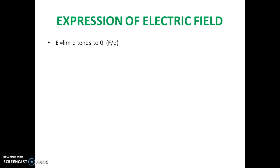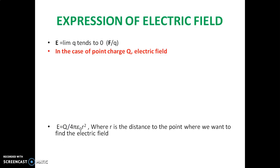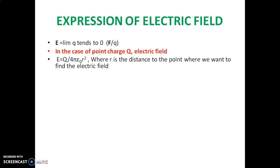We write limit Q tends to 0 of F by Q to represent the force experienced on a unit charge. Here E and F are written in bold letters to show they are vectors. In the case of a point charge Q, the electric field is equal to Q by 4πε₀R², derived from Coulomb's law where F equals capital Q times small Q divided by 4πε₀R², and E equals F by small Q, so small Q cancels. Here Q is the source charge and R is the distance to the point where we want to find the electric field.